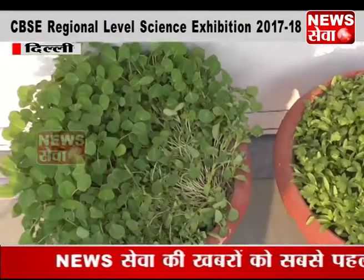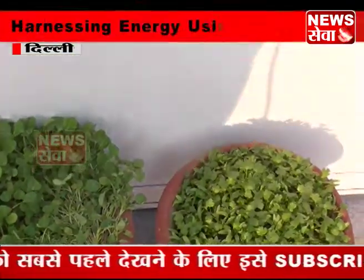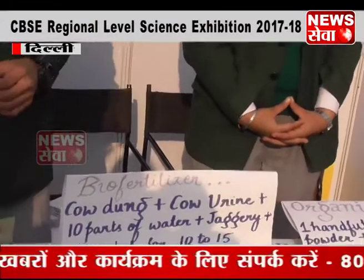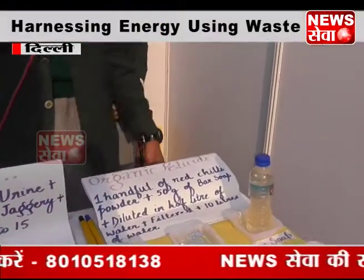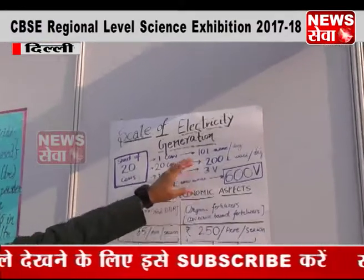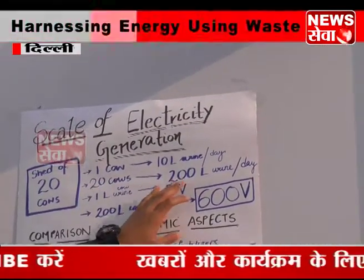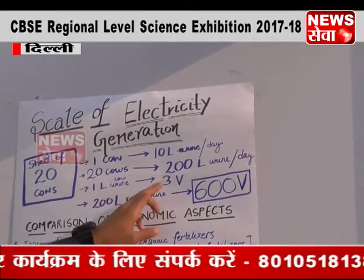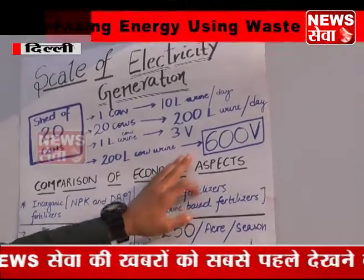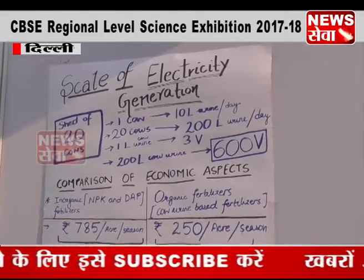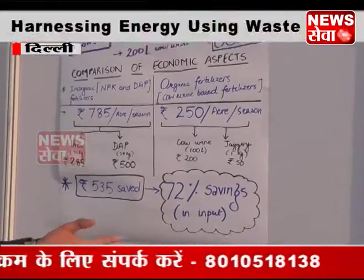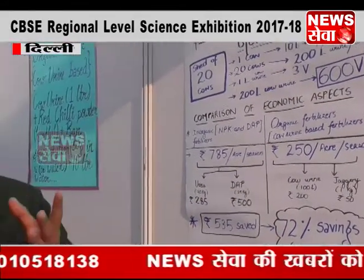We have done organic farming in our school. Now talking about the economical prospect, this project is very cost efficient. We have got 600 volts of potential difference in a small cow shed as you can see here. A small cow shed with 20 cows — each cow gives 10 litres of urine per day, so 20 cows give us 200 litres of urine per day. For 1 litre of cow urine we have got 3 volts of potential difference in our experiment. So for 200 litres of cow urine we can get a 600 volt battery. The farmer is not making any investment — the waste that was earlier being thrown away is now being used to generate electricity.